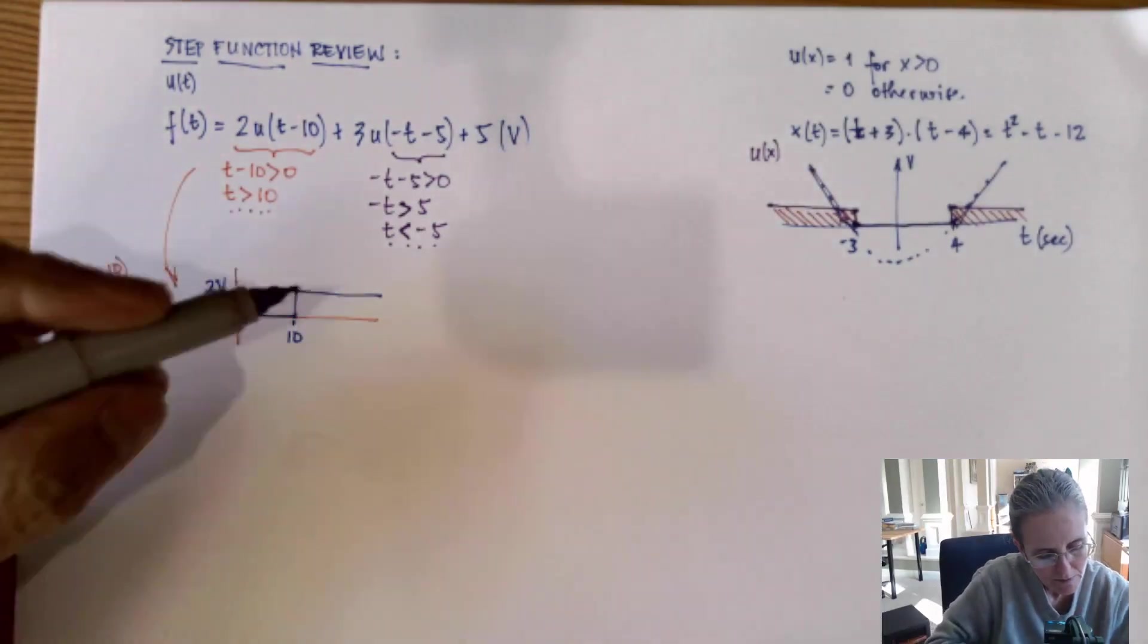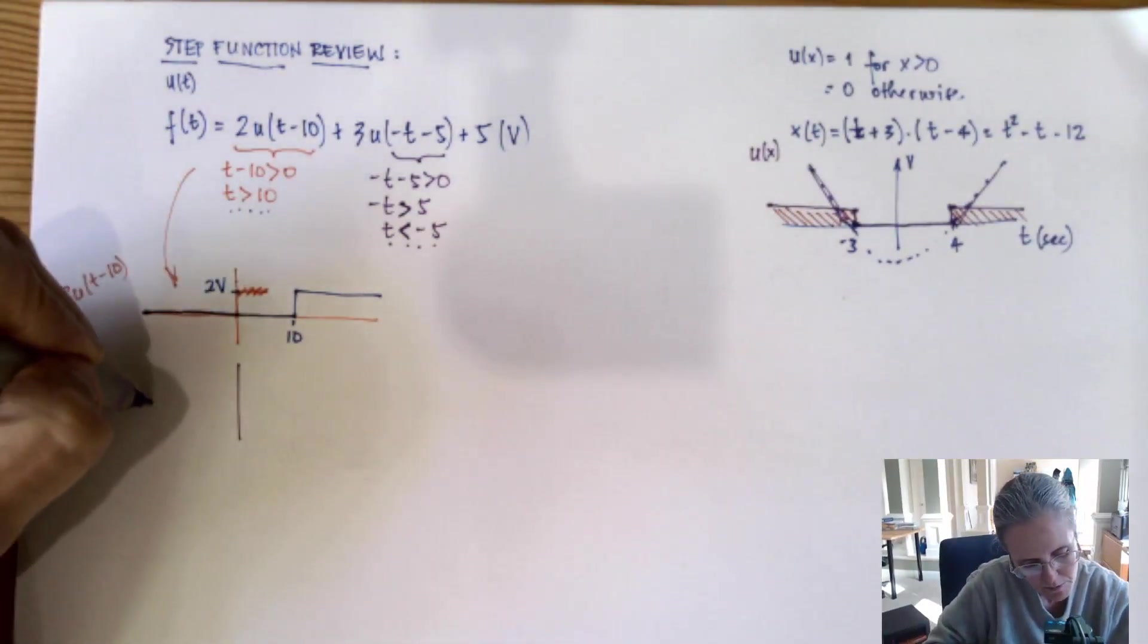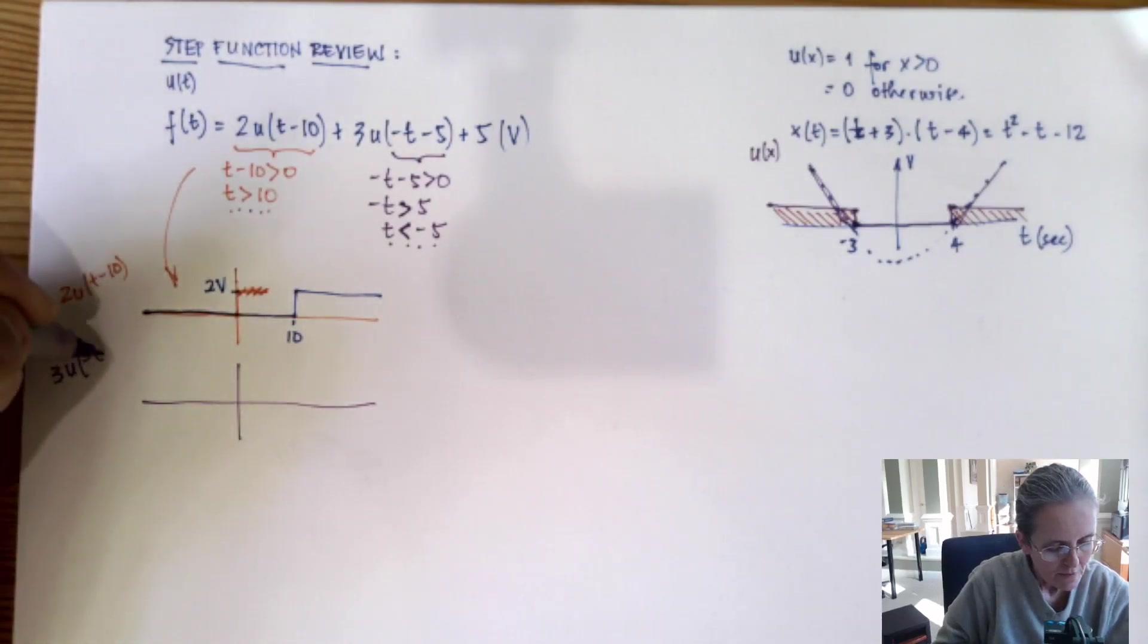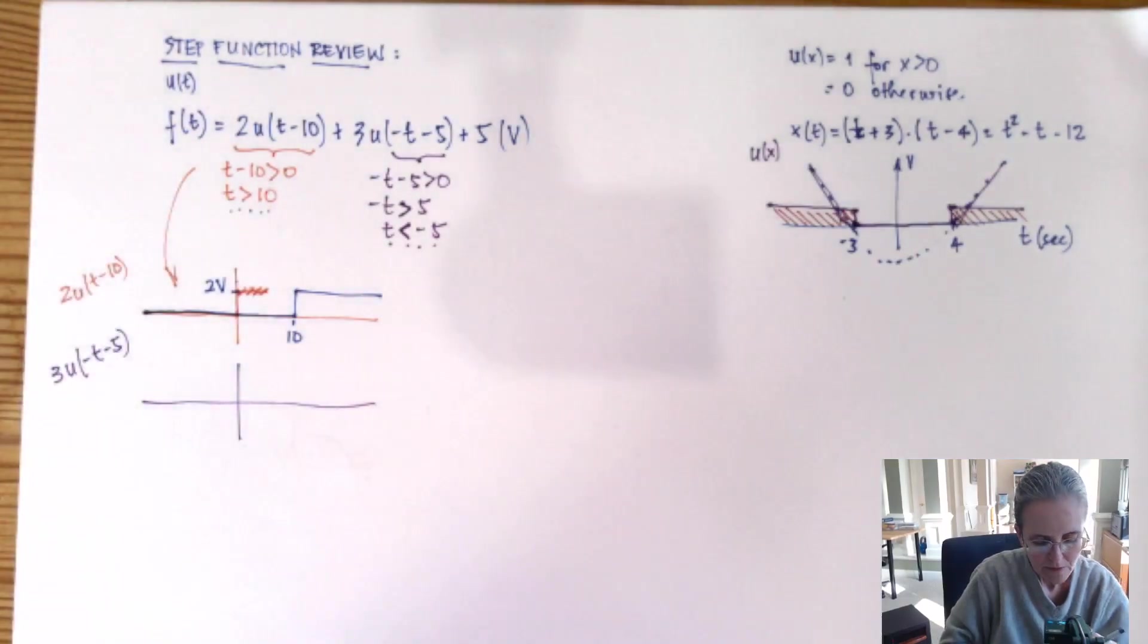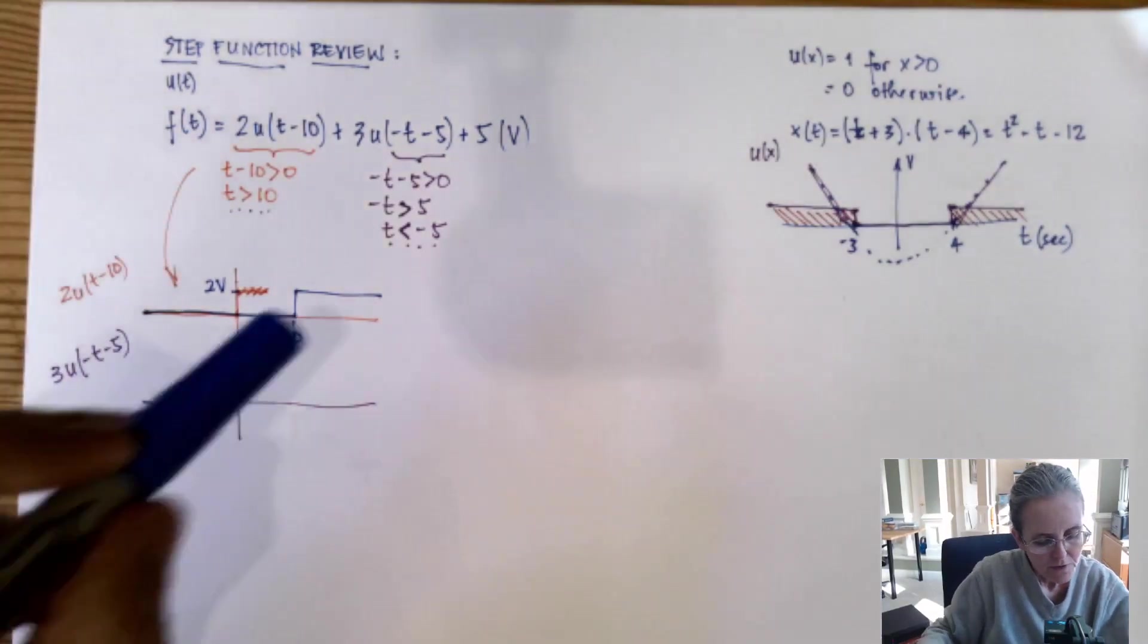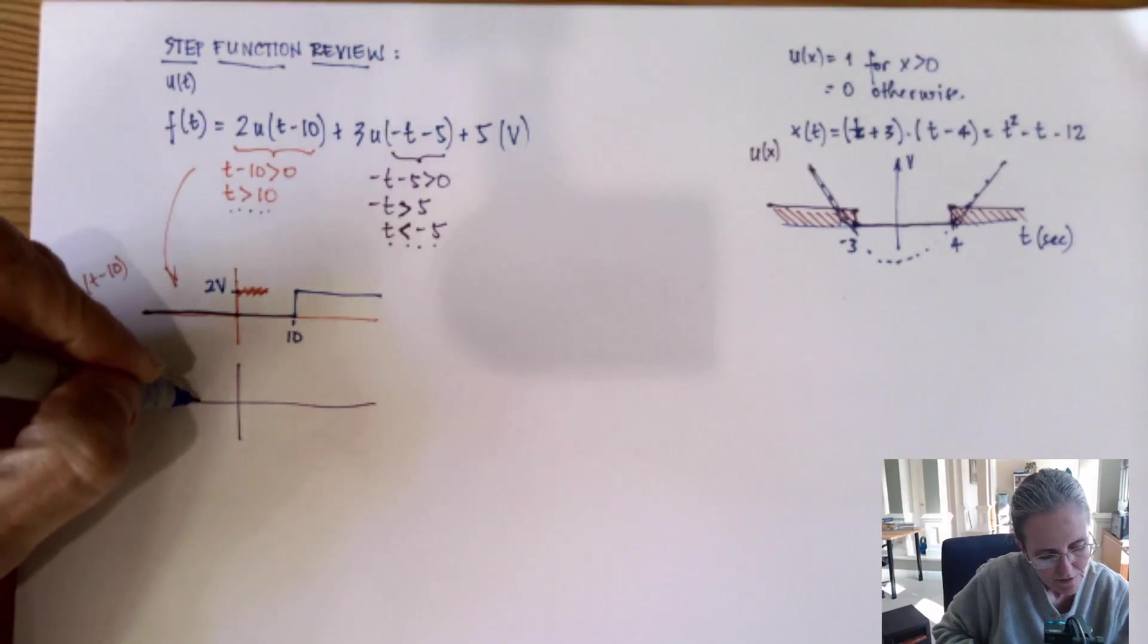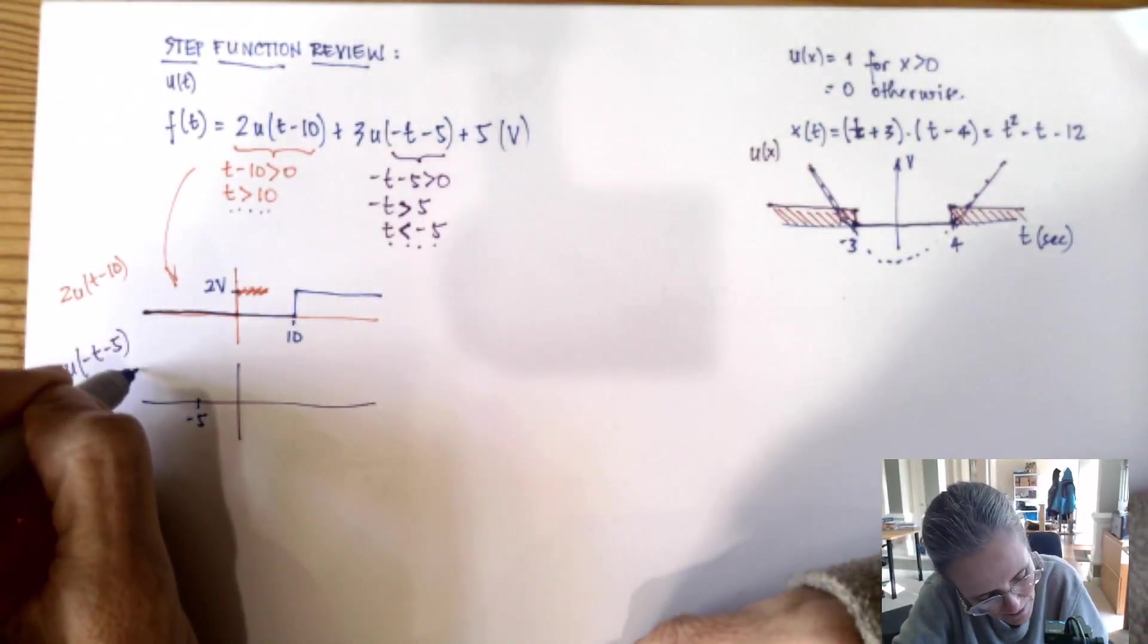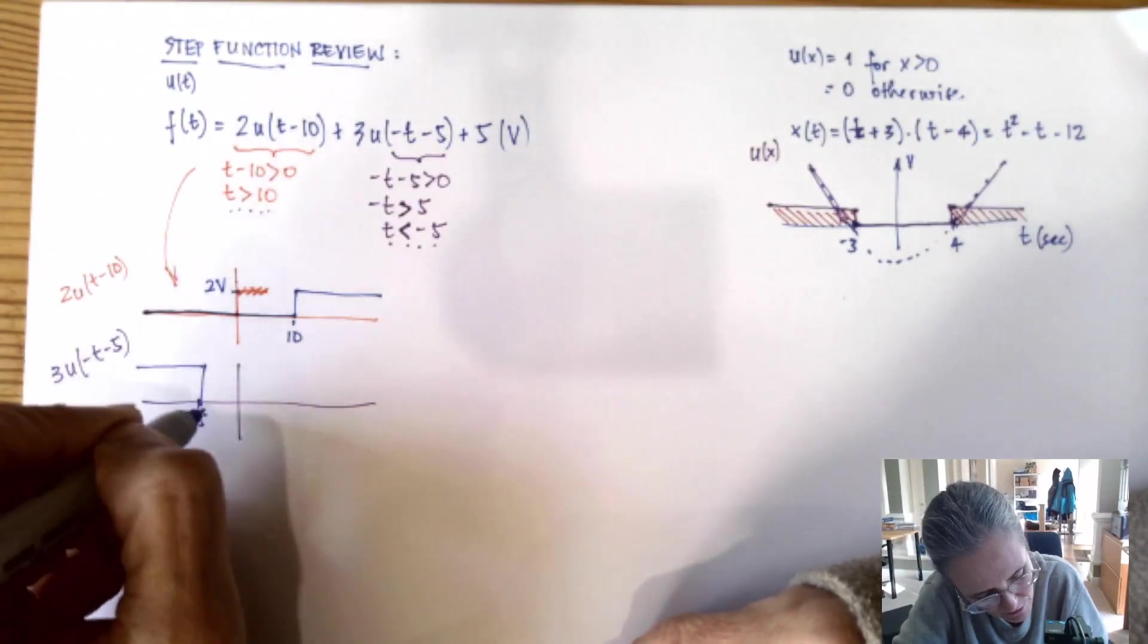The second one, the purple one, I'm going to draw 3u(-t-5). This one is for t less than minus 5. Let's say minus 5 is here, this is three, and then it goes to zero.